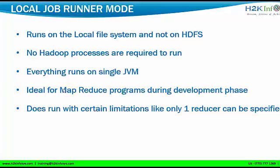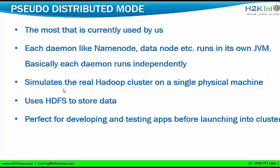Don't worry about this — I will explain what a reducer is, what its function is, and how many reducers we can use. But for now, remember that in local job runner mode we can use only one reducer in our MapReduce programs. The next one is pseudo distributed mode. This is one of the important modes we will be discussing. Even tomorrow we will be installing Hadoop in pseudo distributed mode. Not only us — if you go to companies, they use pseudo distributed mode for their test and development environments. Only in production do they use a different mode.